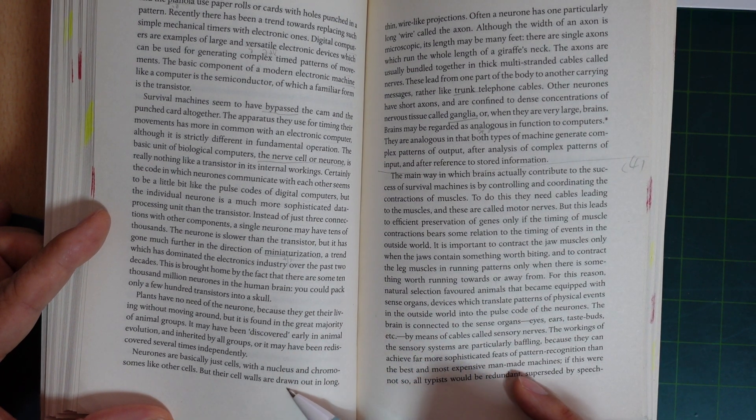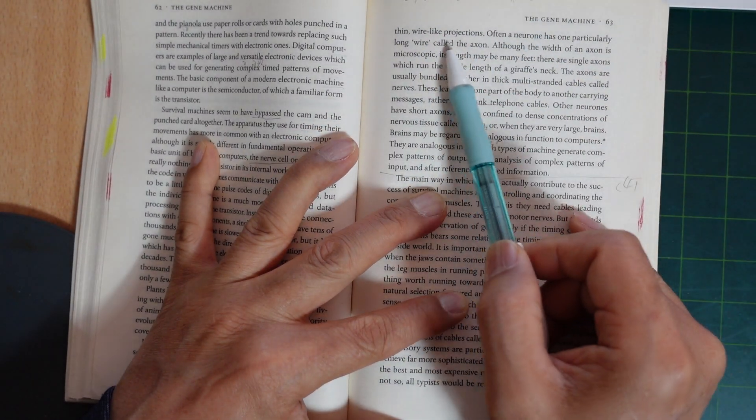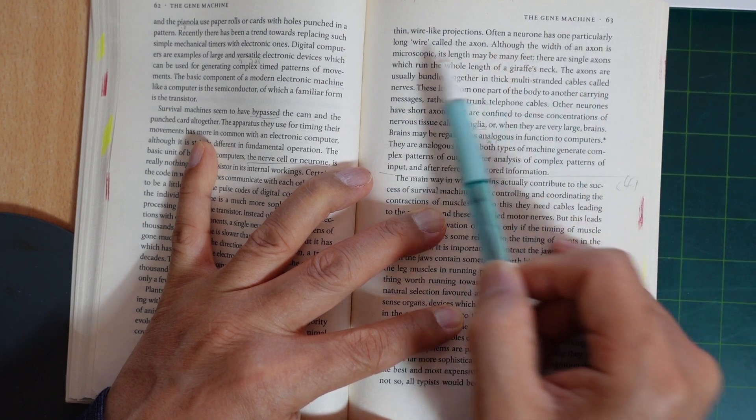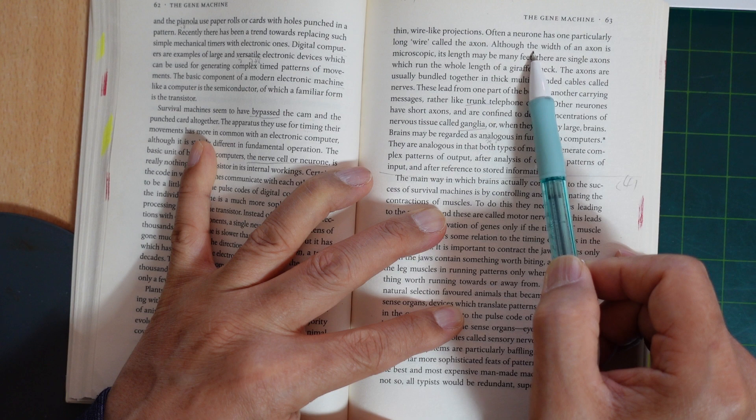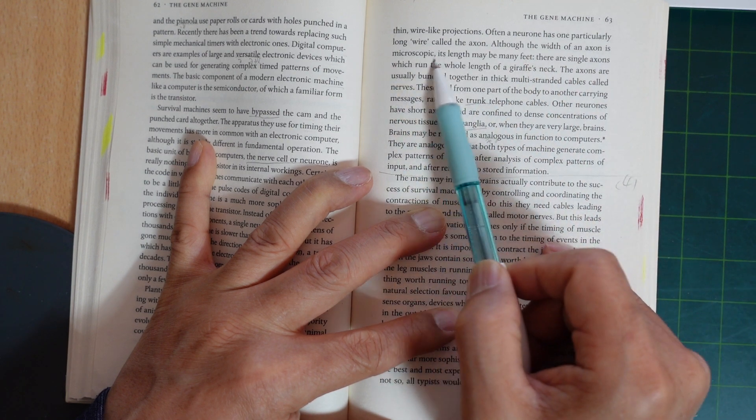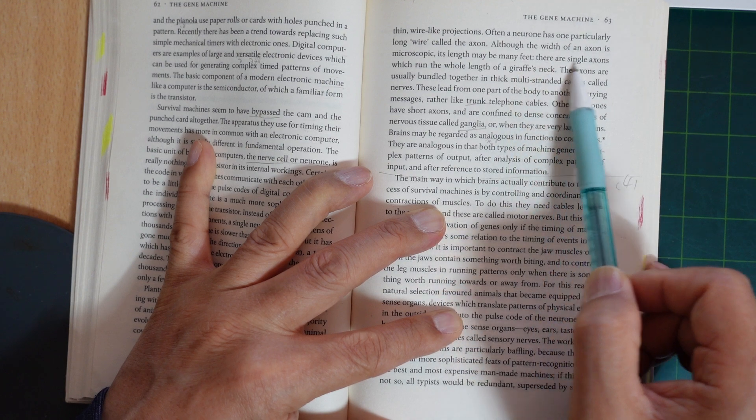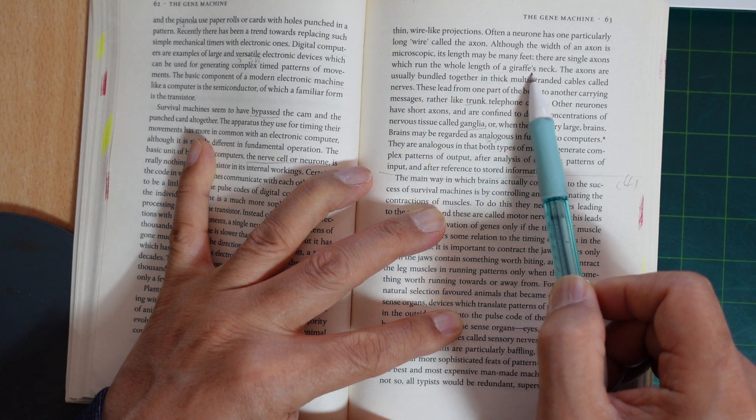But their cell walls are drawn out in long, thin, wire-like projections. Often a neuron has one particularly long wire called the axon. Although the width of the axon is microscopic, its length may be many feet. There are single axons which run the whole length of a giraffe's neck.